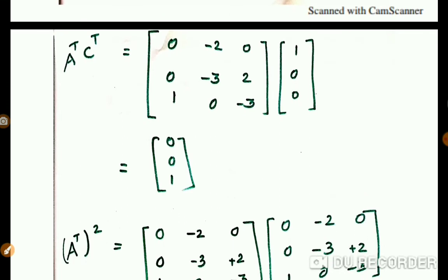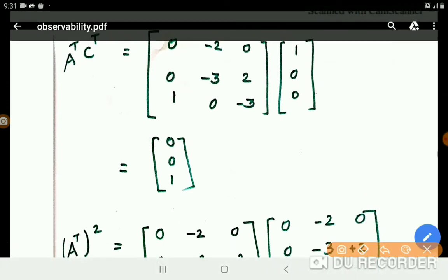Then what next? So next is to find A transpose into C transpose. A transpose C transpose: the first row into C. So the first row, 0 times 1 is 0, minus 2 times 0 is 0, 0 times 0 is 0. So all is 0 here.